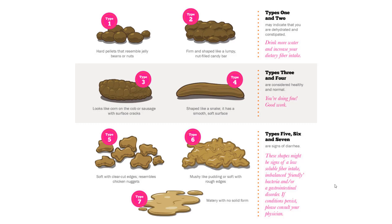Type 1 and 2 are too dry and likely to cause constipation — more water and soluble fiber is necessary. Types 5 through 7 indicate the feces move through too quickly and not enough water was reabsorbed; they can also contain undigested fat.